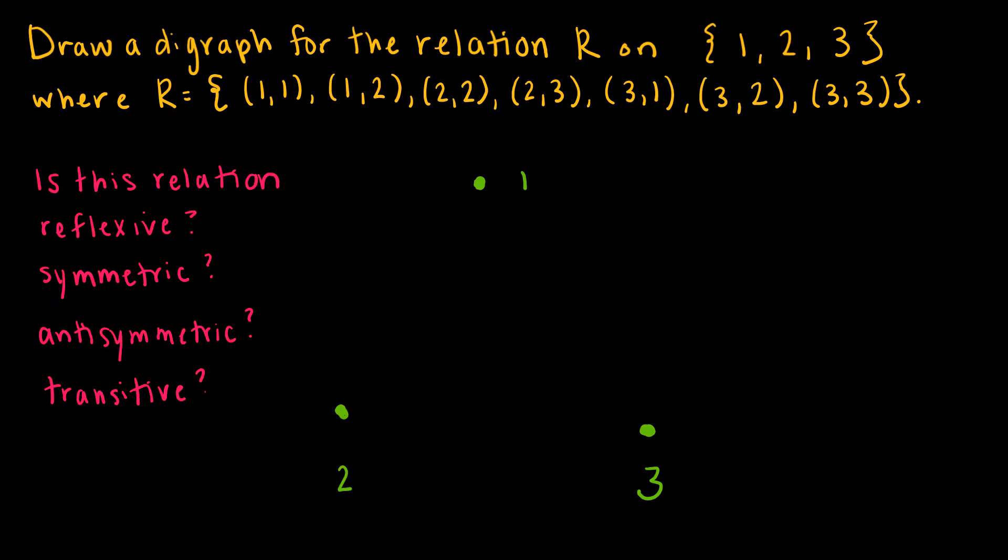Now let's look at just one more example in reverse. I have given you, in this case, the ordered pairs that are in the relation, and I want you to draw the digraph, and then I want you to tell me a little bit about the properties of this digraph, which we'll go through together. So let's go ahead and draw this.